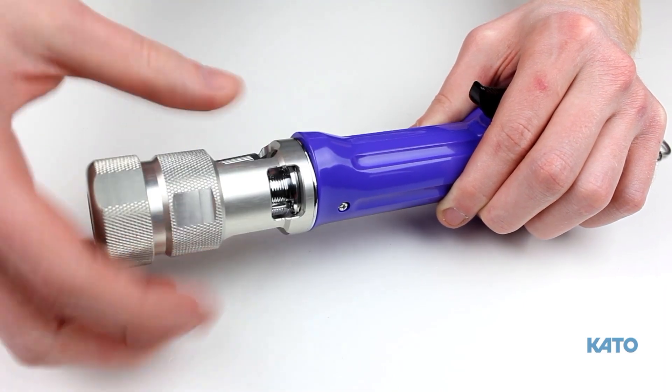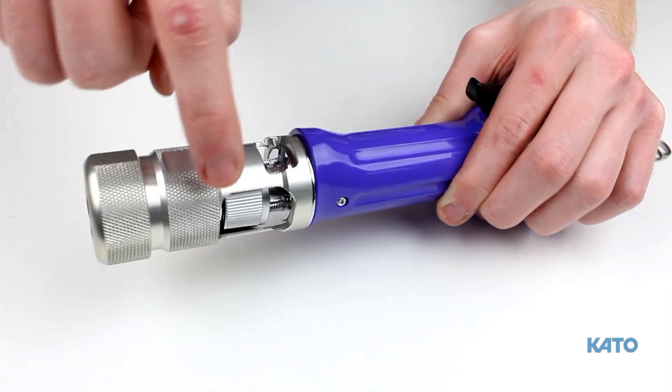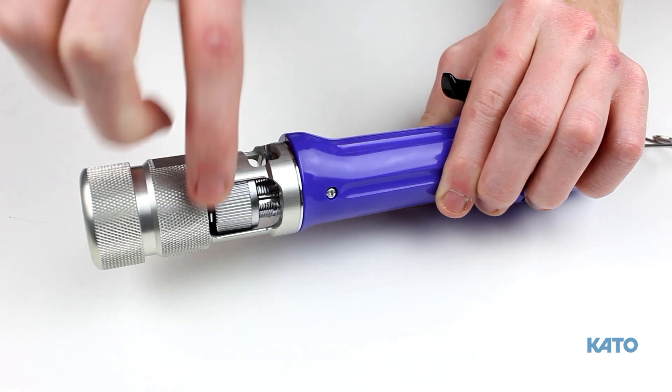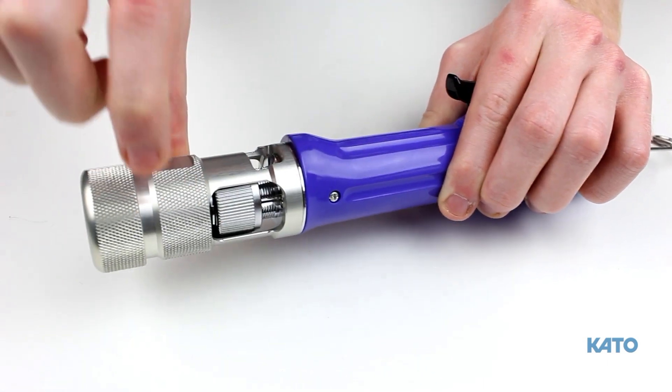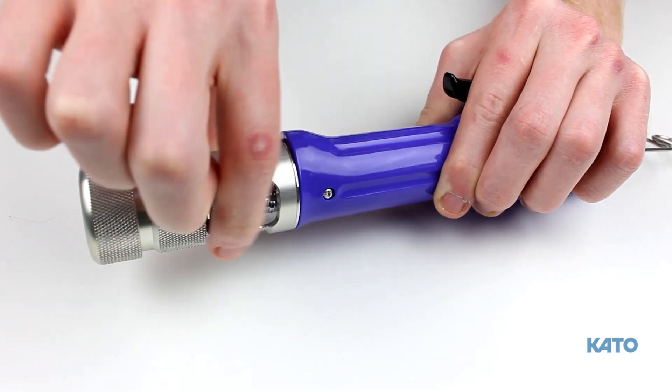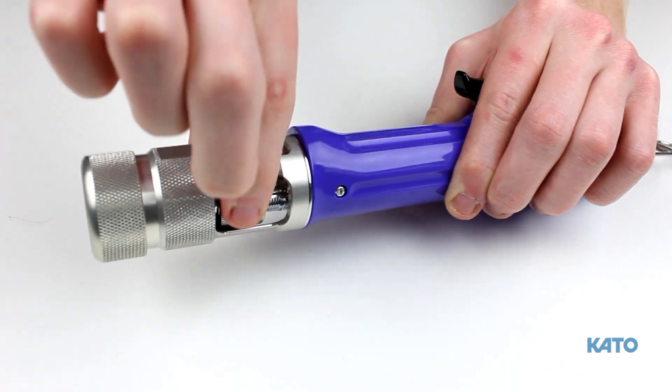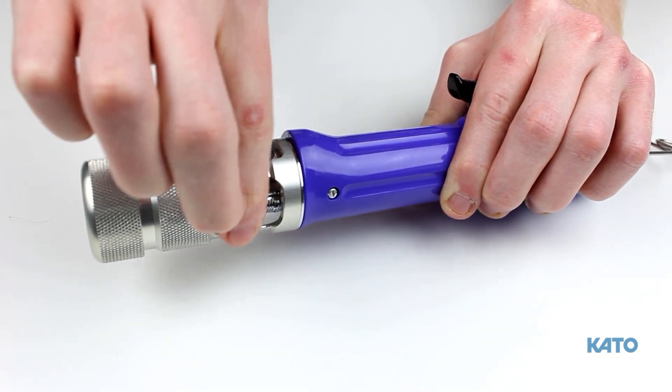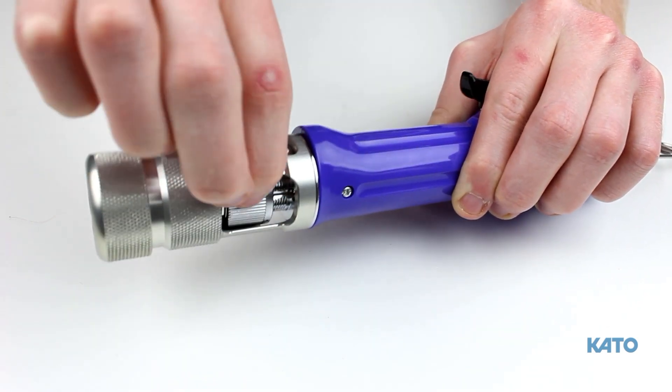A good hand-tightening is all that is needed. Do not over-tighten. Notice the window in the adapter. This provides access to the torque nut and allows the torque to be adjusted when the tool is fully assembled.